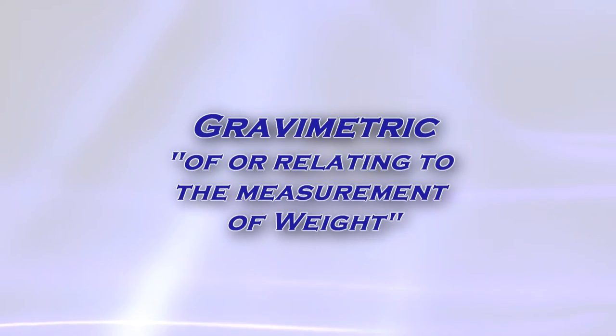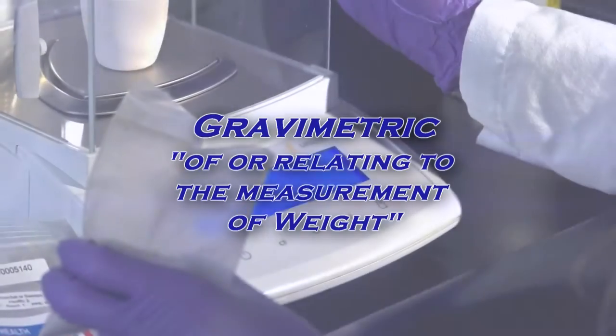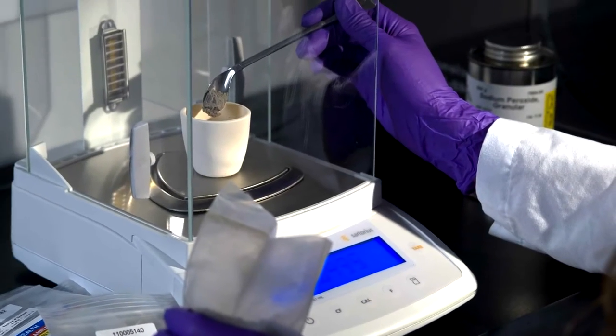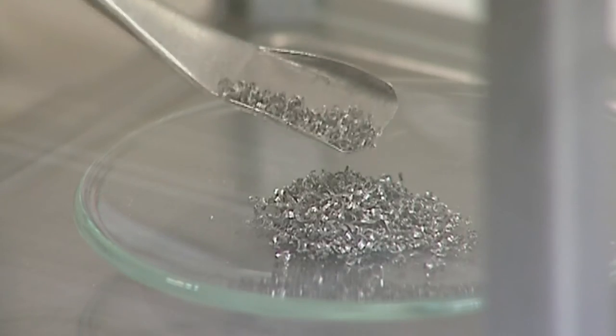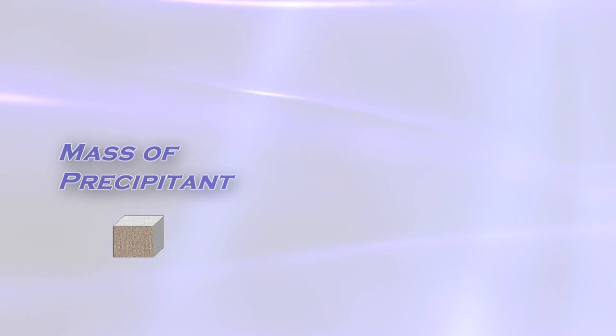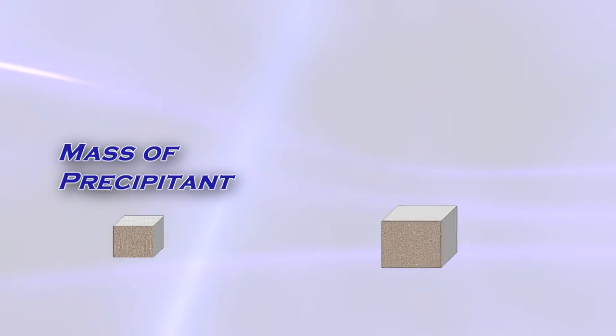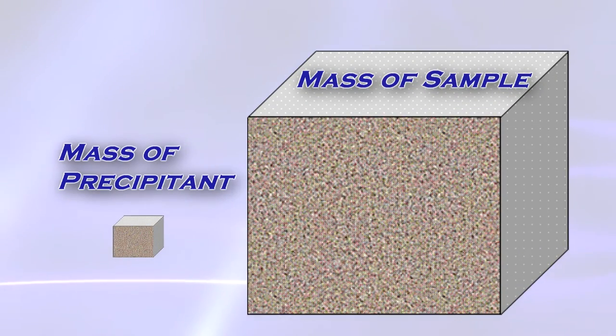Gravimetric is an adjective which means of or relating to the measurement of weight. Gravimetric analysis is therefore the term used in these processes as the mass of the precipitant is compared to the mass of the sample to determine the percentage of metal present.